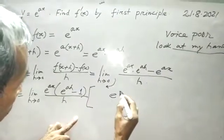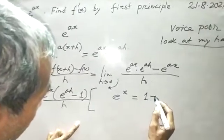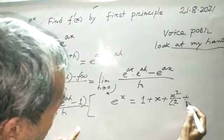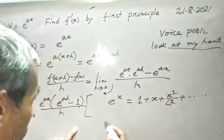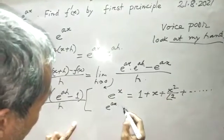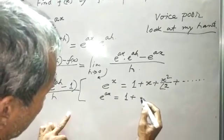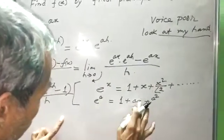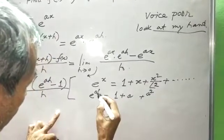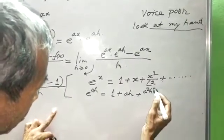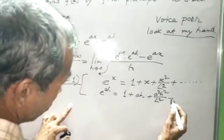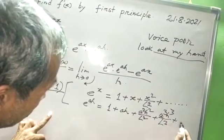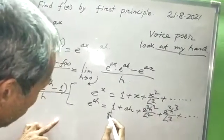Using the expansion: e to the power ax equals 1 plus x plus x squared by factorial 2 plus dot dot dot. Similarly, e to the power ah equals 1 plus ah plus a squared h squared by factorial 2 plus a cubed h cubed by factorial 3 plus dot dot dot.